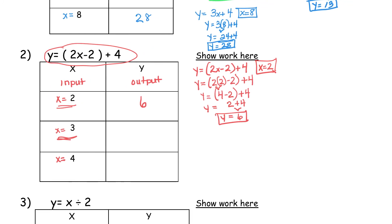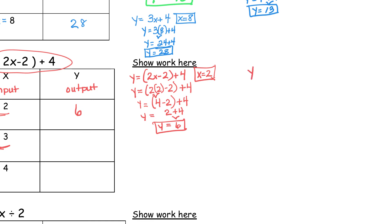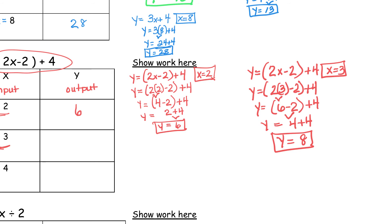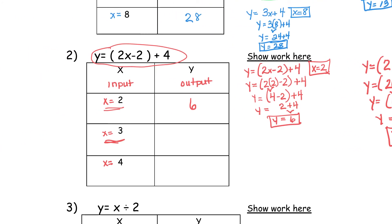Let's try the next one: x is equal to 3. Write the same problem on the side — y equals 2(x minus 2) plus 4, and x is equal to 3 this time. Substitute the 3 in for x: y equals 2 times 3, minus 2, plus 4. Follow the order of operations, make sure you continue to bring your y down. This is 6 minus 2 in parentheses — do that first. 6 minus 2 is 4, plus 4. My final answer is y is equal to 8. So when x is equal to 3, y is equal to 8.